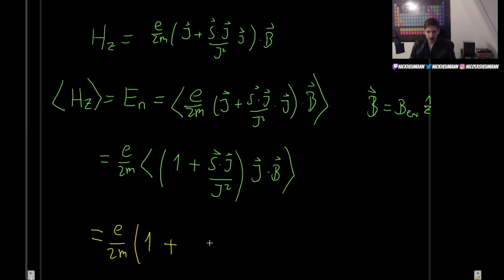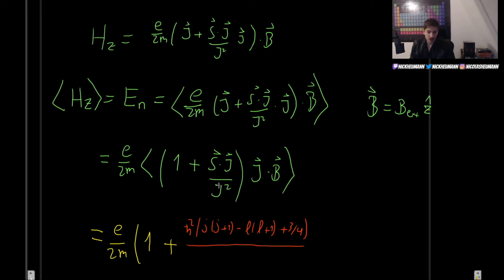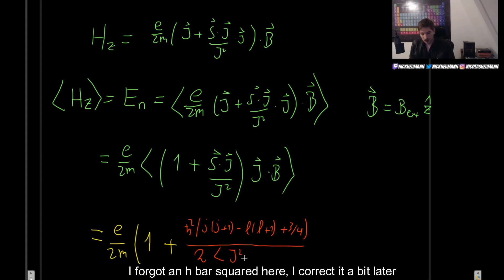Plugging in, we get ℏ² times j(j+1) minus l(l+1) plus three over four, divided by the expectation value of J squared times two. The expectation value of J squared is simply j(j+1). We also still need to deal with the expectation value of J dot B. Since they are in the same direction, that is simply J magnitude times B magnitude, giving B_ext.